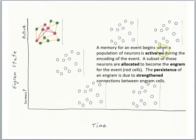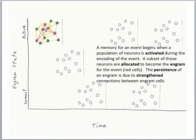A memory for an event begins when the population of neurons is activated during the encoding of the event. A subset of those neurons are allocated to become the engram for the event. The persistence of an engram is due to strengthened connections between engram cells. The green and red cells are active as they process some experience, but the allocation phase involves only a subset of activated cells — the red cells — actually taking part in the engram, becoming the memory for the event.